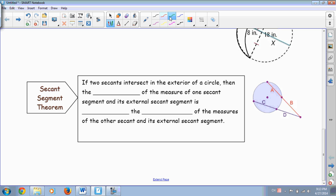So we're going to move on to our next theorem, which is the secant segment theorem, which says that if two secants intersect in the exterior of a circle, then the product, or again, we're multiplying, the product of the measurement of one secant segment and its external secant segment is equal to the product of the measures of the other secant and its external secant segment.